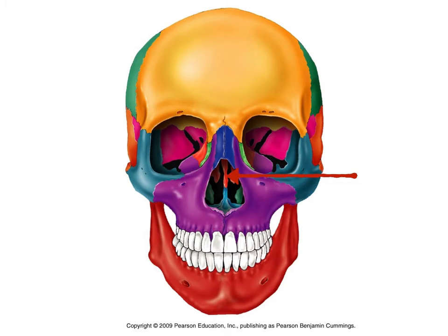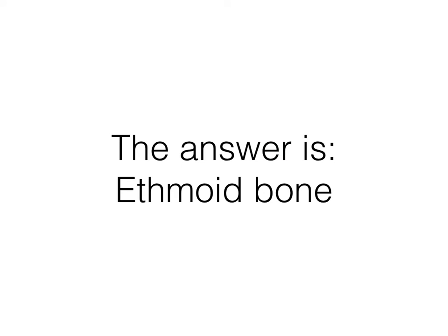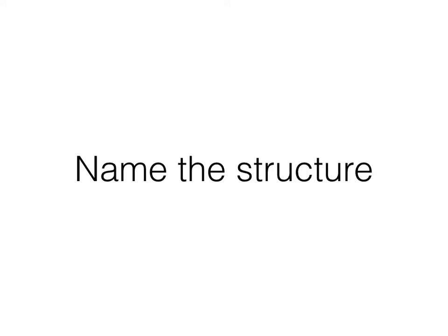I'd like you to name the structure that's projecting down into the nasal cavity there. Those are called nasal concha, but they're part of the ethmoid bone — all the upper ones there. They are orange in the picture, just like the ethmoid bone has been orange in all the different diagrams we've been working with.